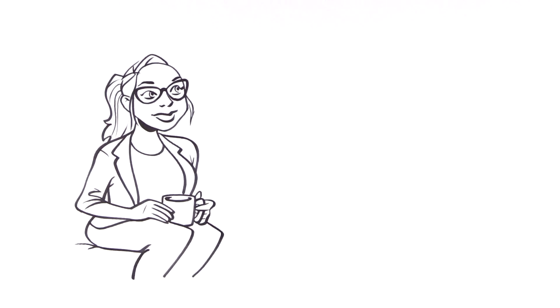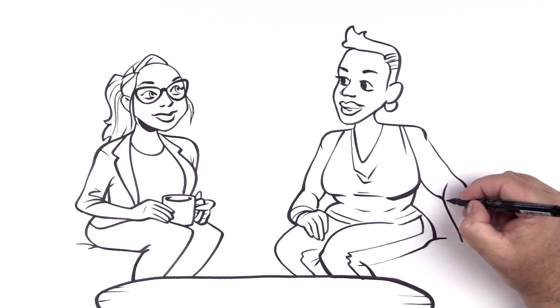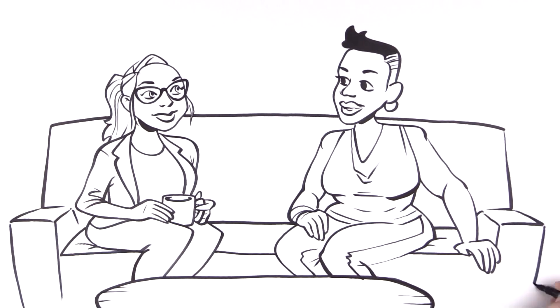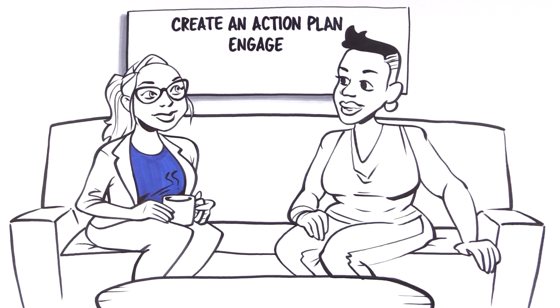The next one is reach out to a trusted ally. Reach out to a friend, a co-worker, a family member, someone that will help you create an action plan. Engage in the problem solving. Really think about what you want to happen.